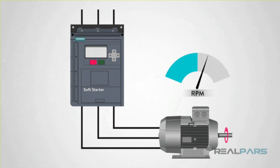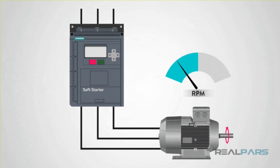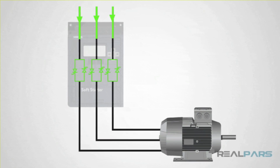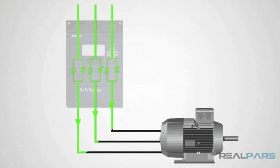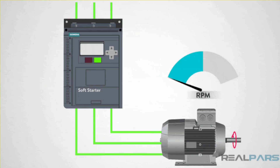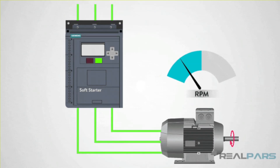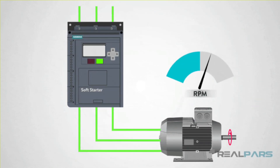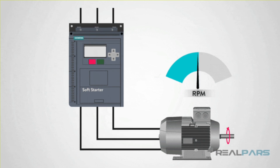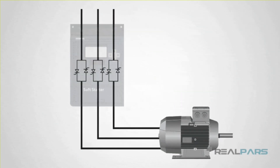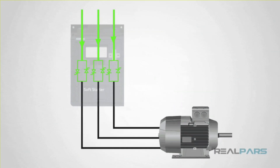What is VFD? A AC drive, a variable frequency drive, VFD, is a type of motor controller that drives an electric motor by varying the frequency and voltage supplied to the electric motor. Other names of VFD are variable speed drive, adjustable speed drive, adjustable frequency drive, AC drive, and micro drive.